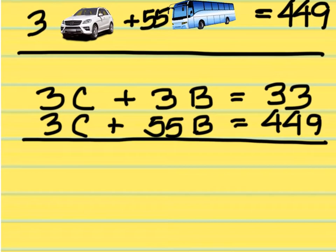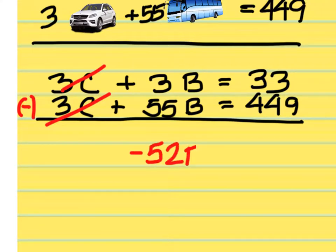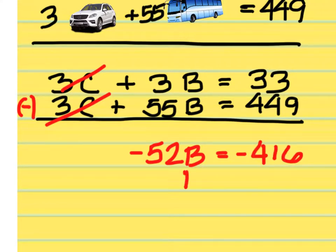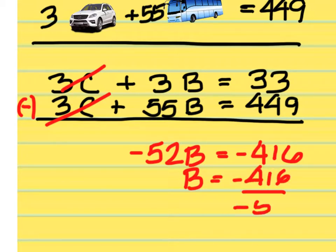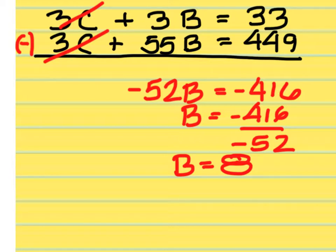What operation must I do in order to get the C's to cancel out? Subtraction. So when I subtract, these C's are gone. Then you'll have to do 3 minus 55, which is negative 52. And 33 minus 449 is going to give me negative 416. Divide negative 416 by negative 52 — that is 8. And what does 8 represent? The number of buses.